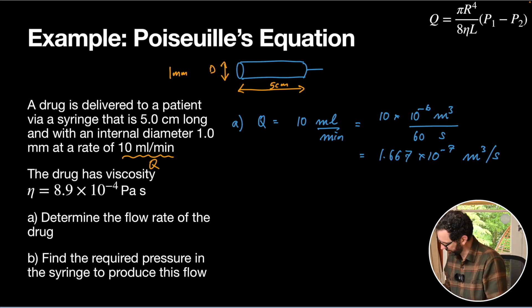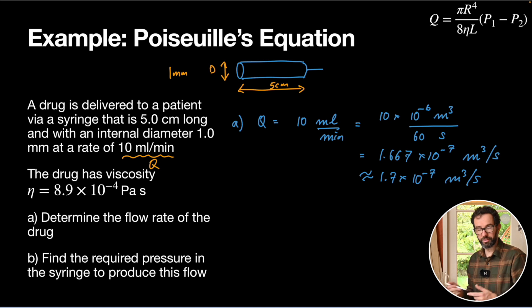And if I was going to round that, I'd say to two significant figures, I'd round that to 1.7. So that is my flow rate. The question is asking me for the pressure.